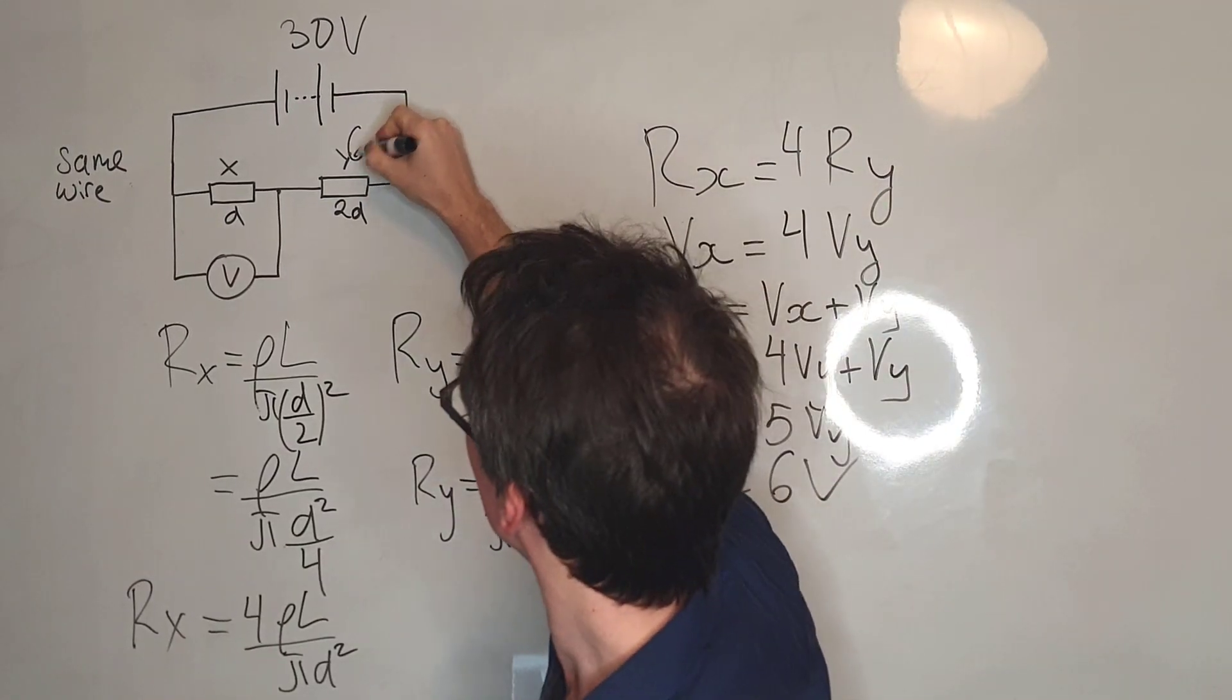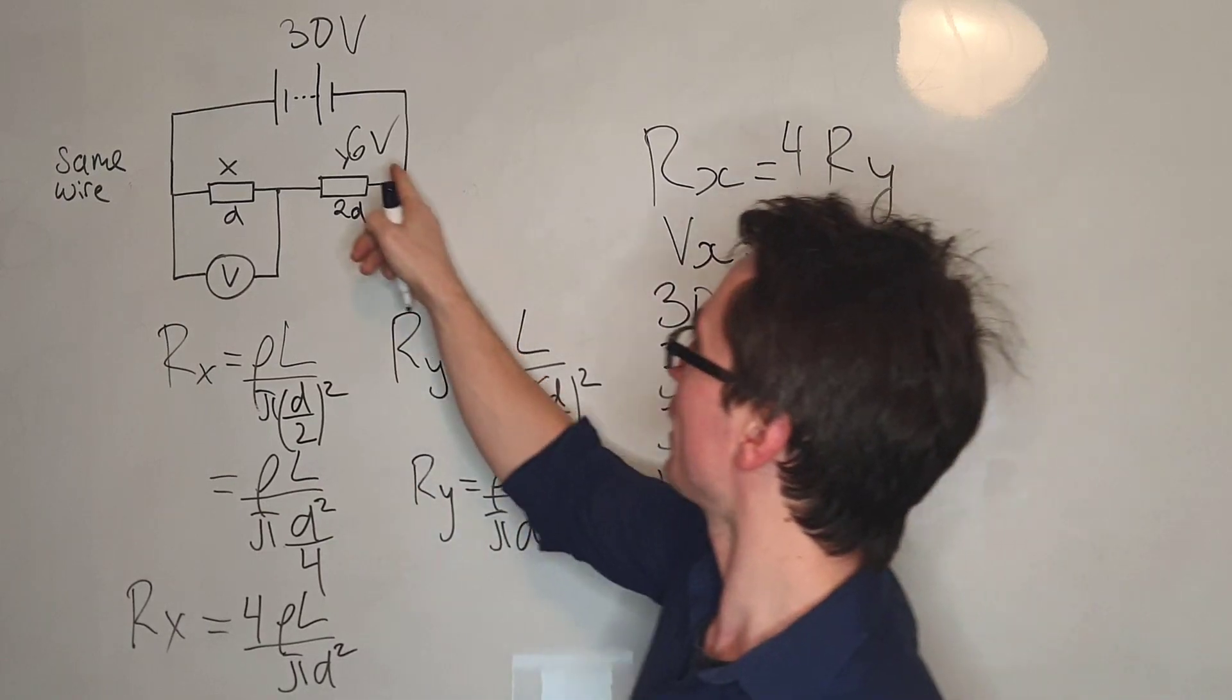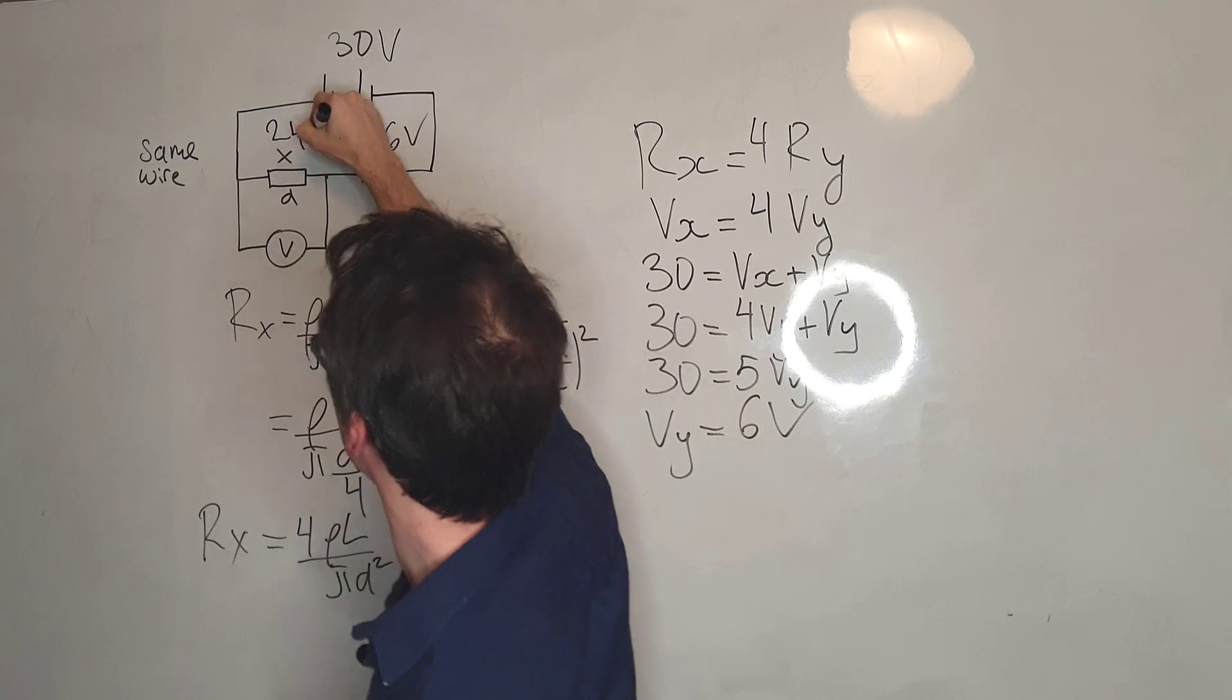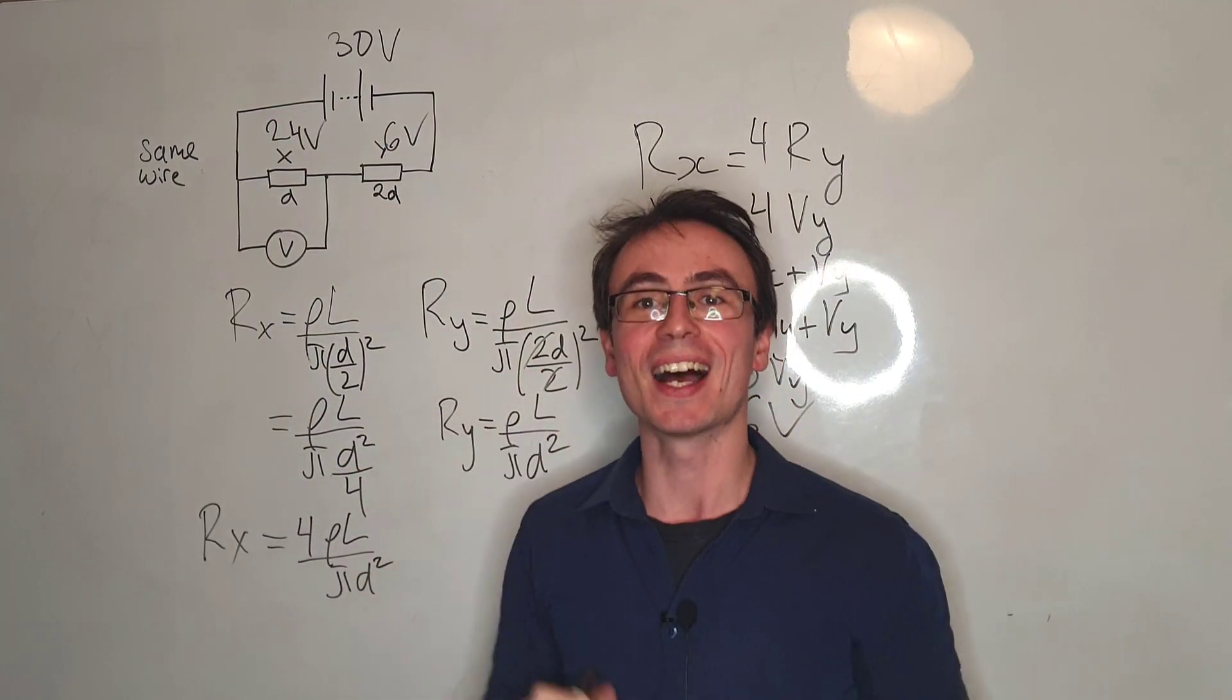And if this voltage here is 6 volts, this means that the voltage across X will be 4 times that amount, which is 24 volts. And the correct answer is D.